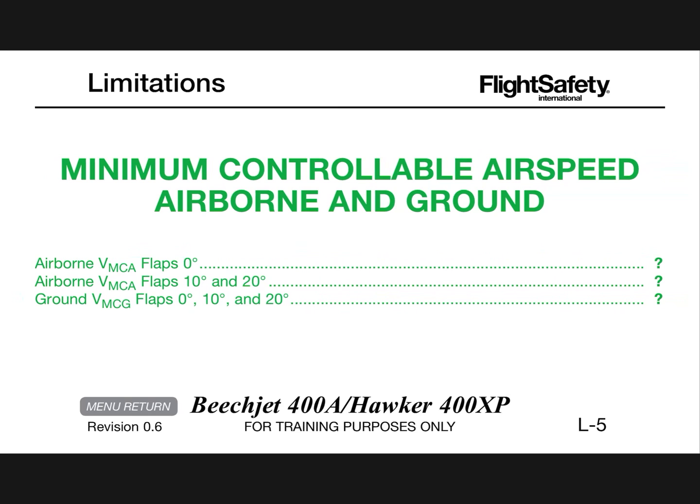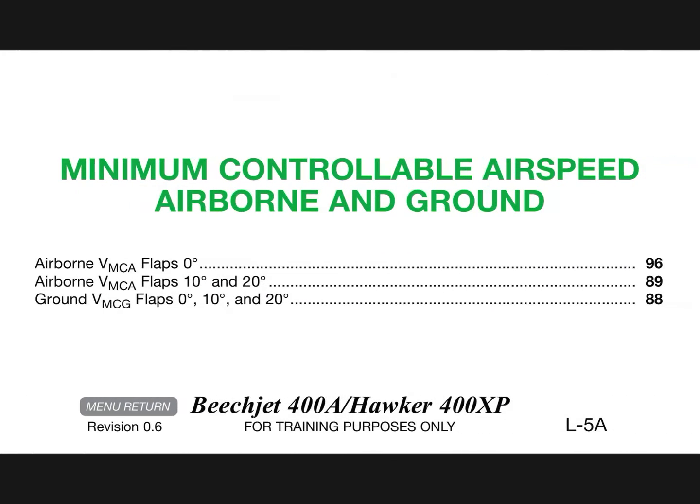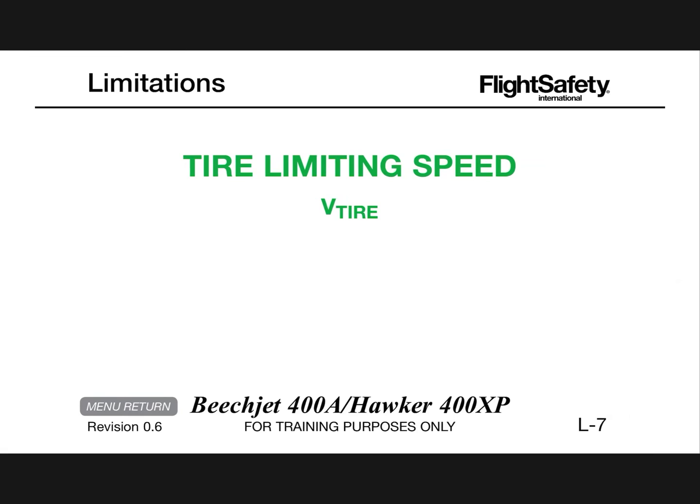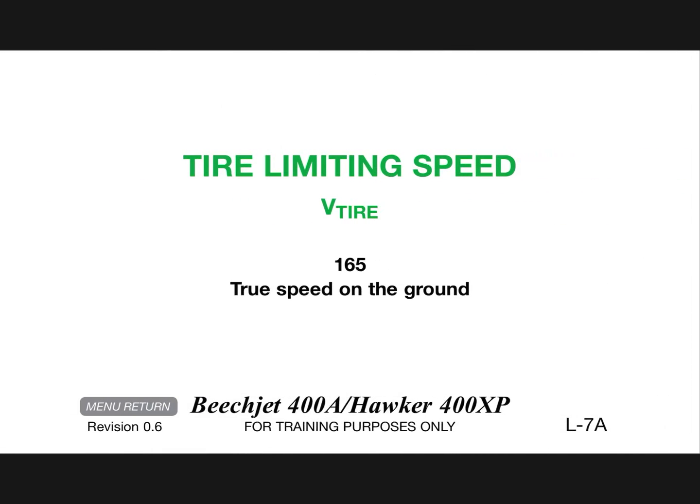Minimum controllable airspeed — airborne and ground: airborne VMCA flaps 0 is 96 knots, VMCA flaps 10 and 20 degrees is 89 knots. VMG (ground) flaps 0, 10, and 20 is 88 knots. Windshield wipers 200 knots if installed. Tire limiting speed 165 knots true speed on the ground.